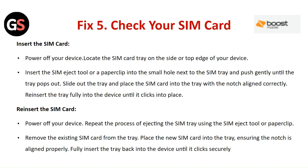Fix 5: Check your SIM card. To insert the SIM card, power off your device and locate the SIM card tray on the side or top edge of your device. Insert the SIM card ejection tool or a paper clip into the small hole next to the SIM tray and push gently until the tray pops out. Slide out the tray and place the SIM card into the tray with the notch aligned correctly, then insert the tray fully into the device until it clicks into place.